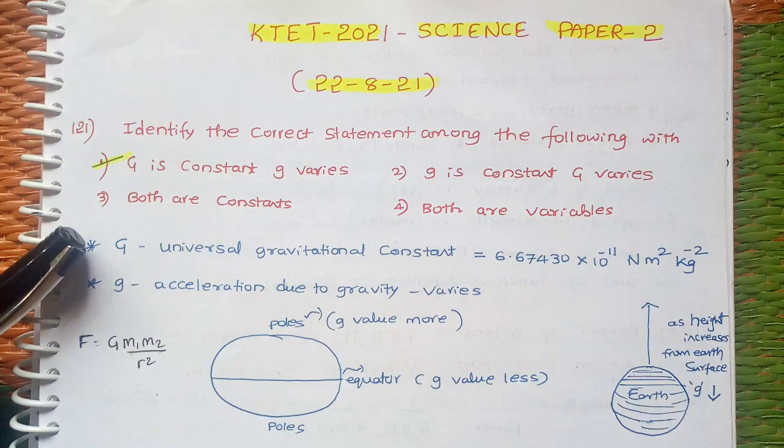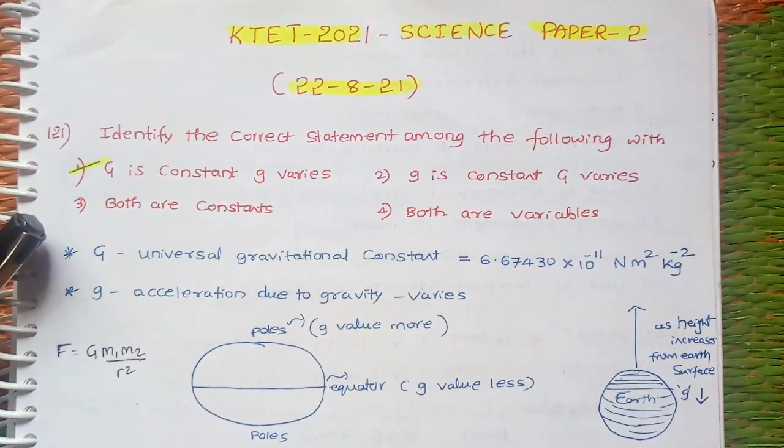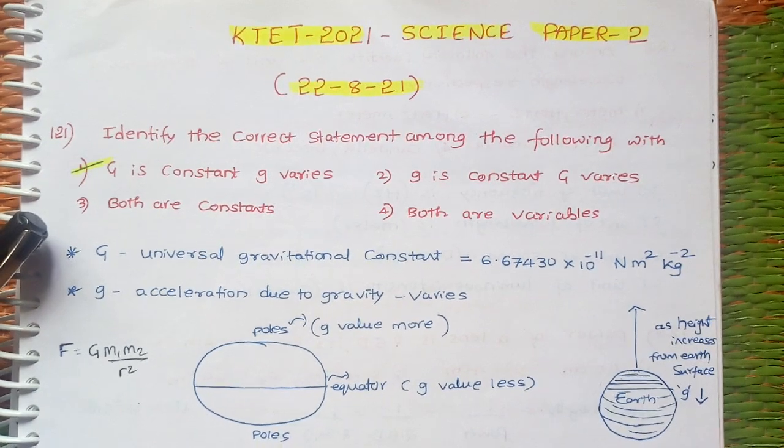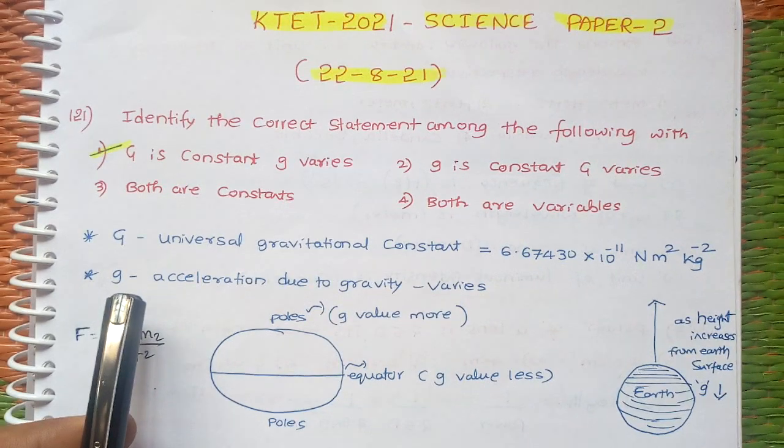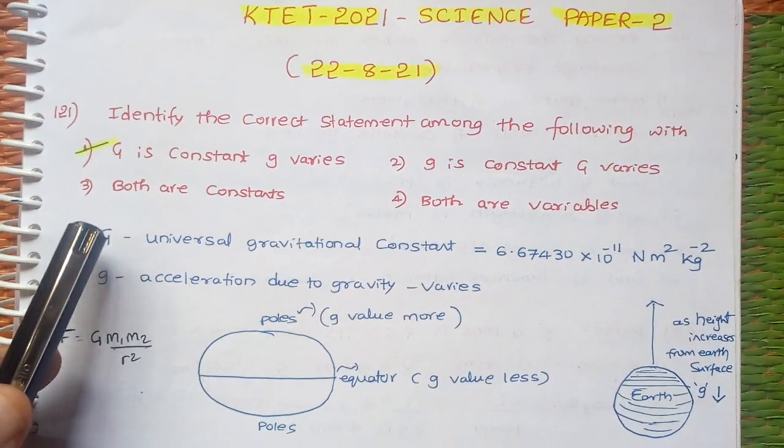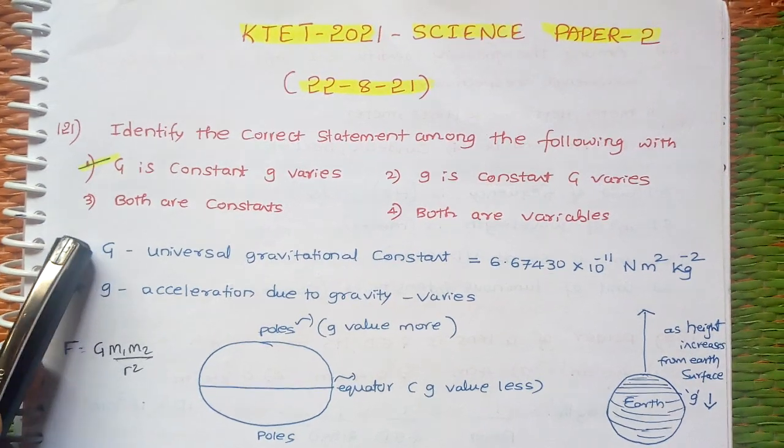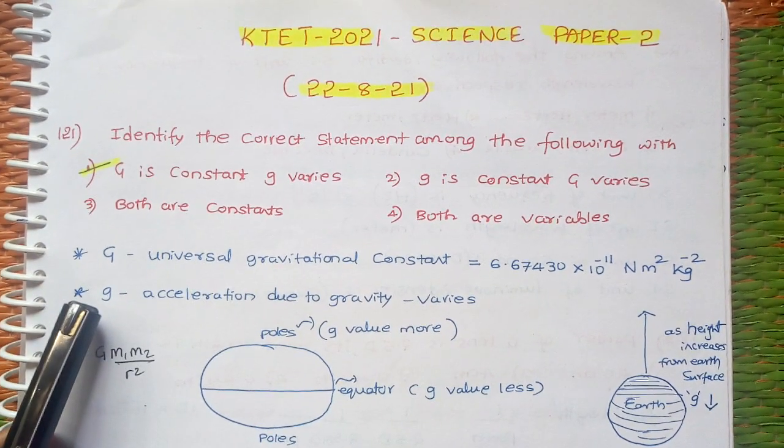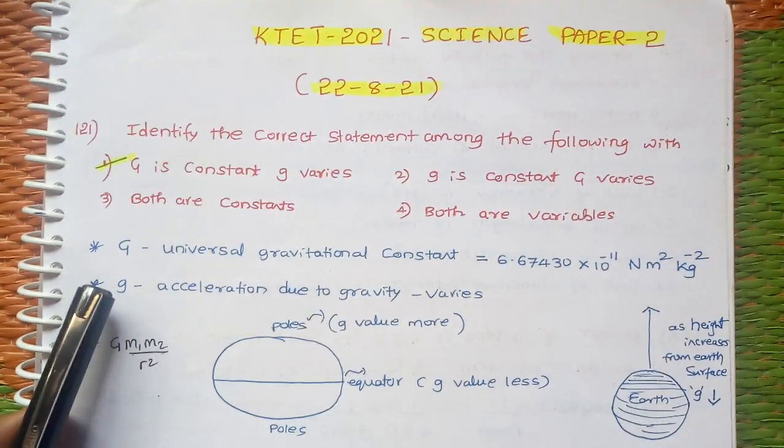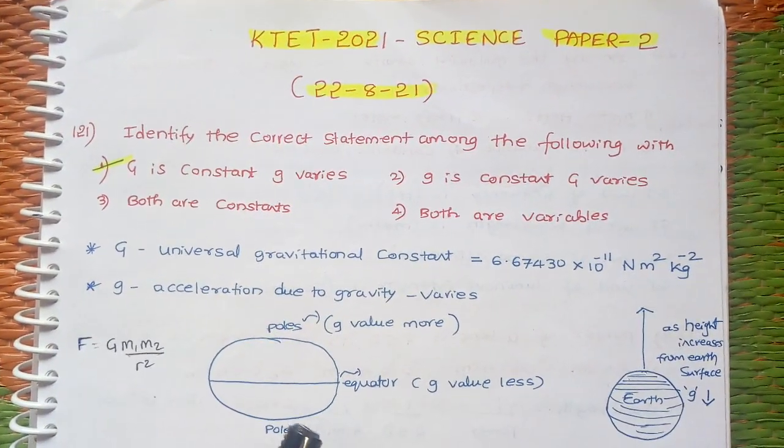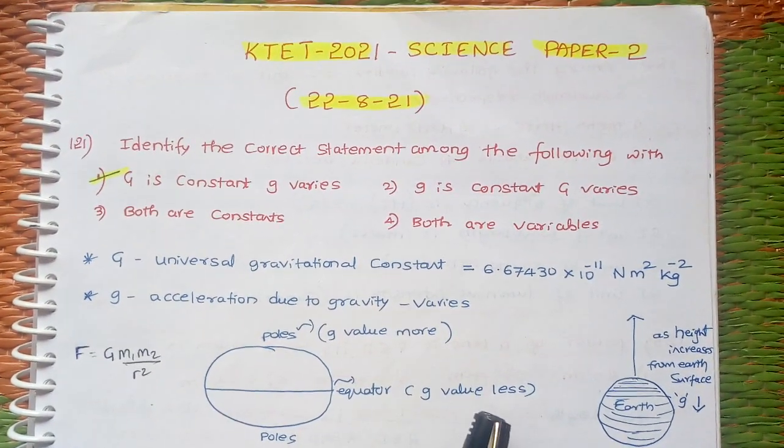As you know, capital G is a universal gravitational constant. Its value is 6.674 × 10^-11 Newton meter squared per kg squared. And small g is nothing but acceleration due to gravity. As its name indicates, G is a gravitational constant that does not vary.